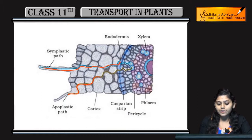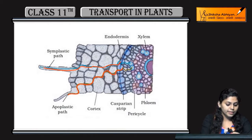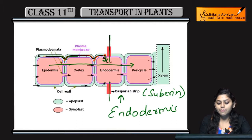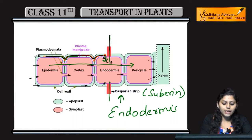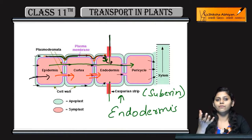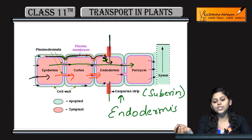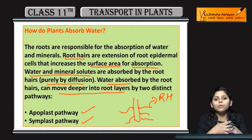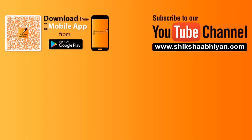Humne kya padha? Apoplast pathway cell wall ke through hoti hai. Agar casparian strips aa jayein toh unhe symplast pathway follow karni padti hai. Symplast pathway mein travel within cells hota hai plasmodesmata ke through, aur yahi ek way hai water ko xylem tak reach karne ke liye. So this was all about how plants absorb water via apoplast aur symplast pathway.